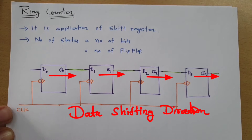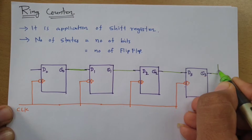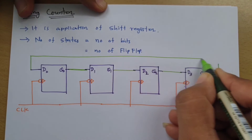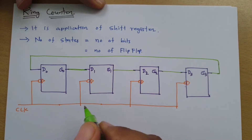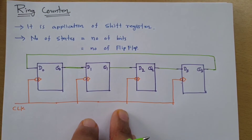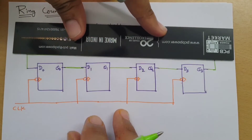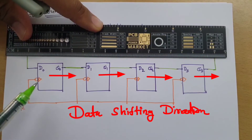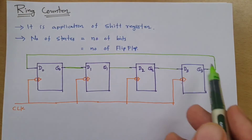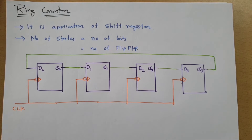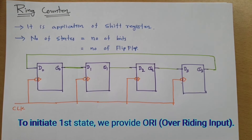In the ring counter, there is a little change: the output of the last flip-flop needs to be connected to the input of the first flip-flop, so it is forming a ring. Without this ring connection, this was a shift register, and data would get shifted in one direction. But with the ring, this data will get circulated inside. Now, to initiate the first state, we need to have an overriding input. Let us try to understand how to have overriding input — it is quite interesting.